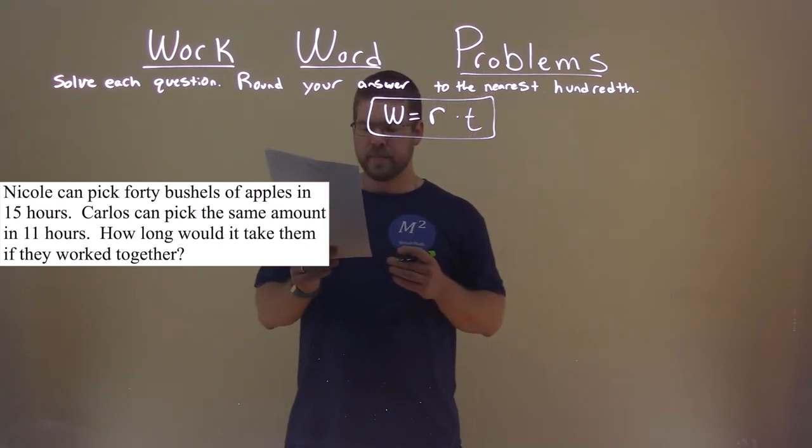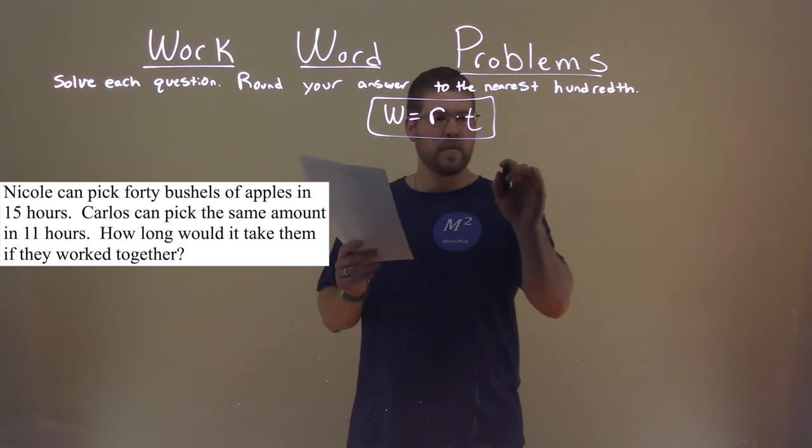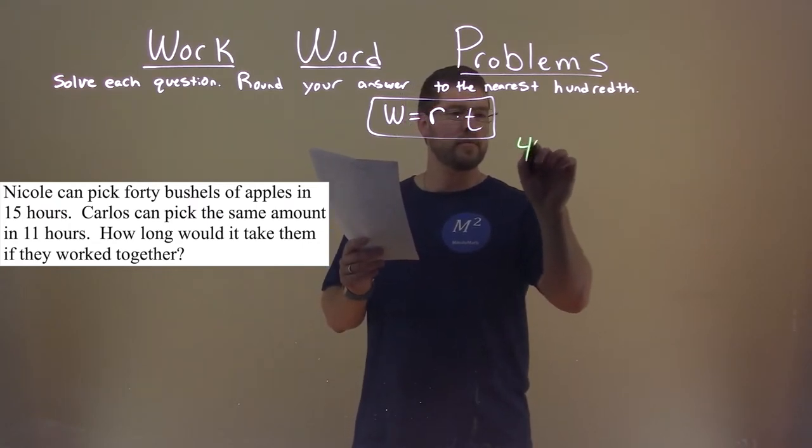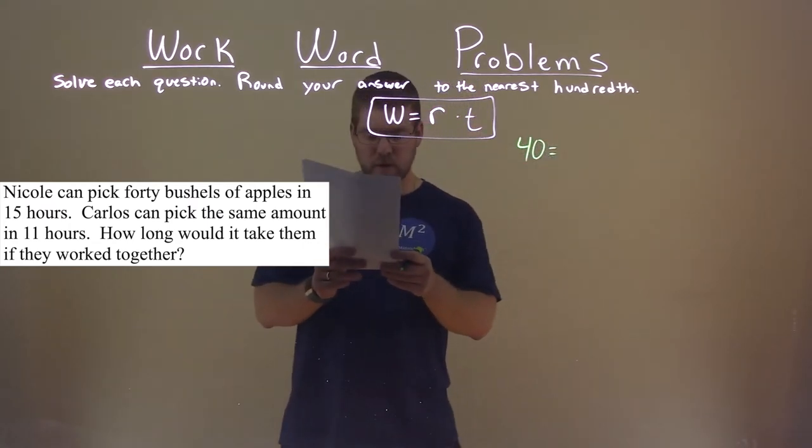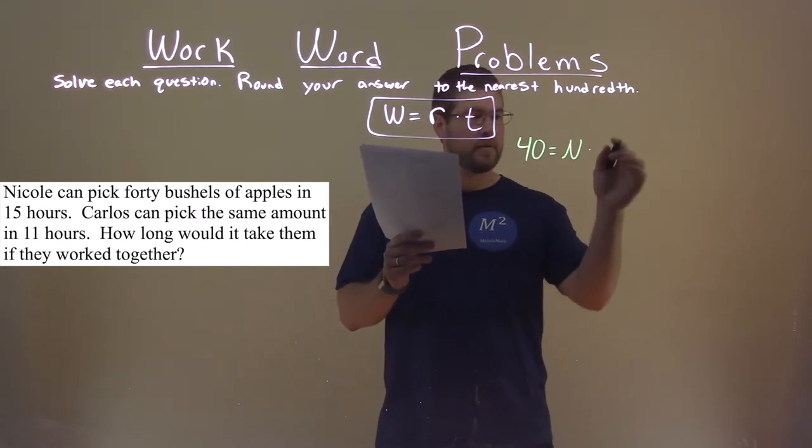So our work here for them is picking 40 bushels of apples. So that work there, 40 bushels of apples, is equal to Nicole's rate times Nicole's time, which is 15.